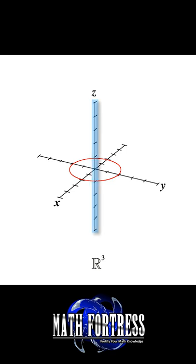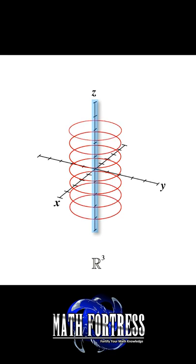Remember, this means that every single value of z, both positive and negative, will have copies of this curve which has the shape of a circle.